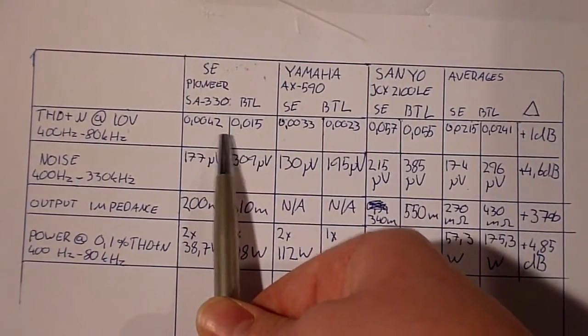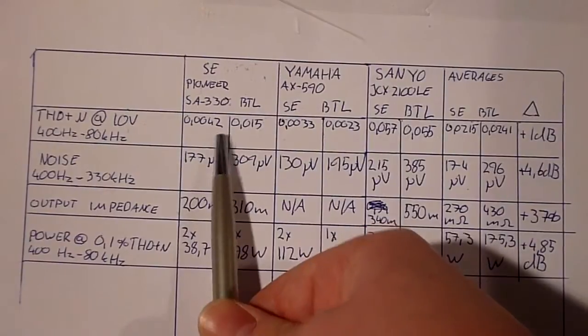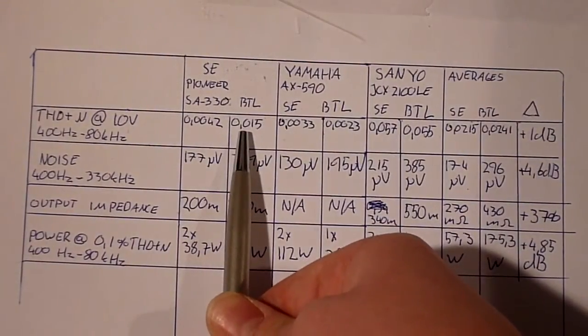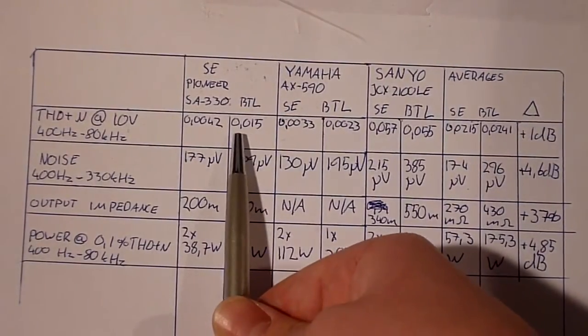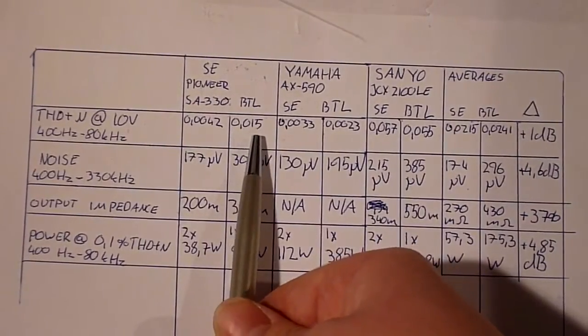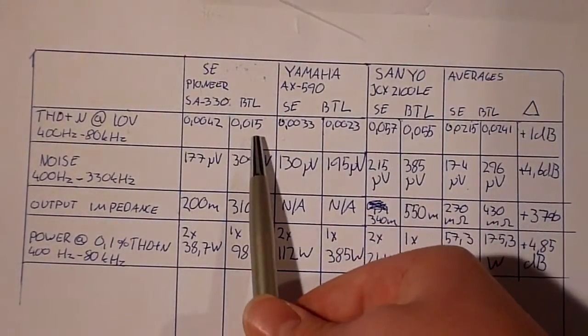And I re-did the test several times on it. I'm not quite sure why it distorts this much when it's running in bridge-tied load mode. Because it doesn't have a problem driving 4 ohm loads, so yeah, this distortion is just an odd artifact.